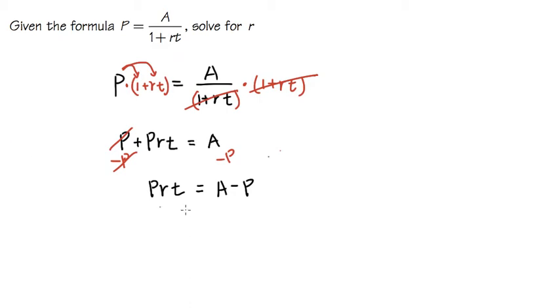We are almost done. Let's look at the left-hand side - this is where the r is. We have P times r times t. Therefore, we need to divide, the opposite operation.